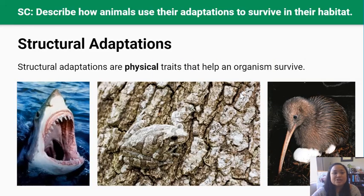Structural adaptations are physical traits that help an organism survive. Physical traits mean that we can see or touch them. For example, sharks have a mouthful of razor sharp teeth. These teeth help them tear into the flesh of their prey, easily cutting through bone and allowing them to be top predators in the sea.